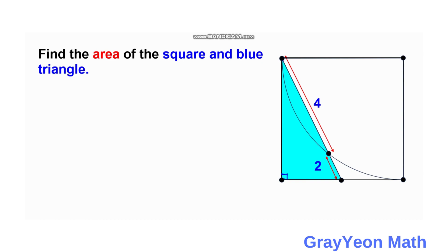We are required to find the area of the square and the blue triangle. The first thing we need to recognize is that this six-unit segment is actually a secant because it passes through the quarter circle at two points. The exterior secant segment is two, and there is a tangent segment, so it is best that we use the tangent-secant segment relationship.